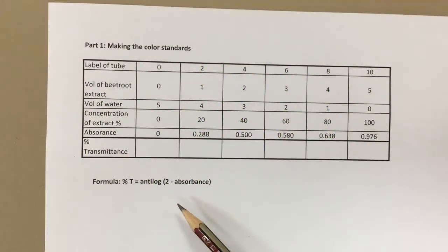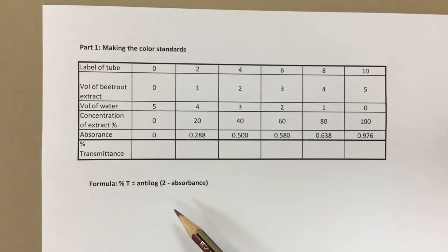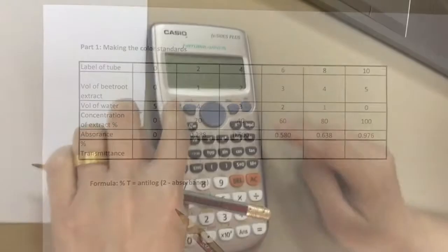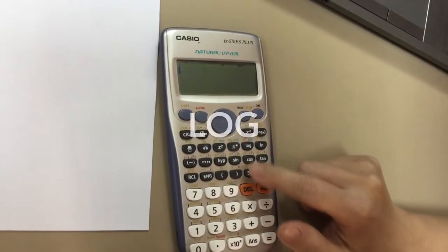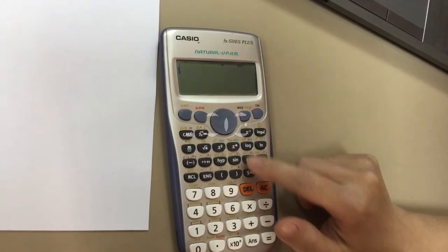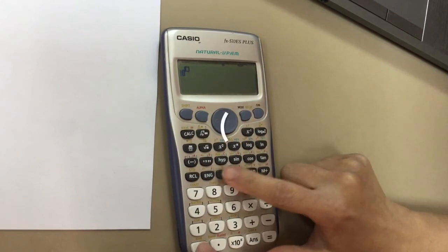In part one, we investigated the effect of different concentrations of alcohol on the permeability of beetroot cells. We used a colorimeter to measure the absorbance of the different pigment concentrations.